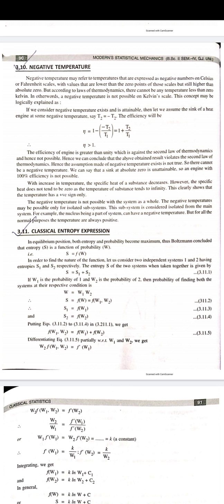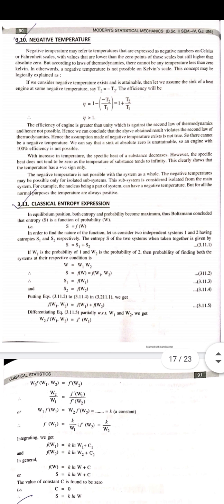But this means that as the temperature of the system approaches infinity, the specific heat of the system will be reduced to zero. This clearly shows that temperature has a positive sign. The specific heat does not tend to zero as temperature tends to infinity.